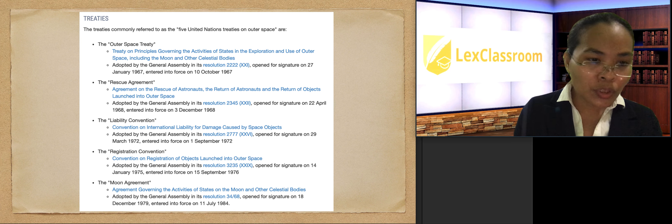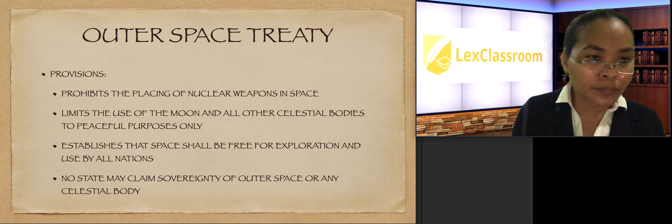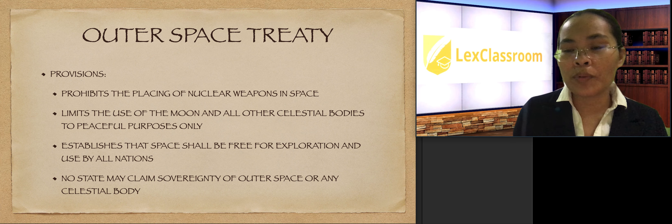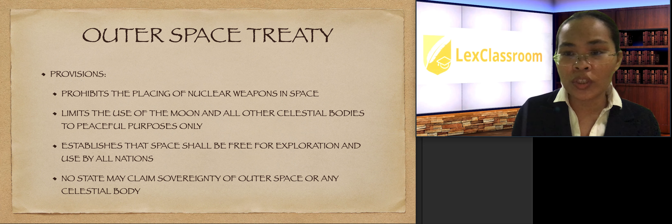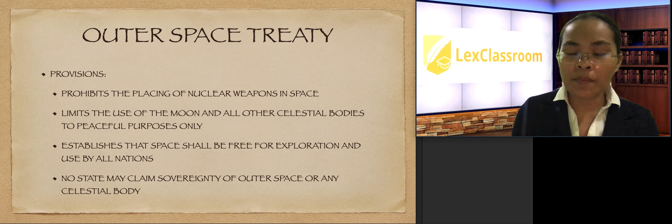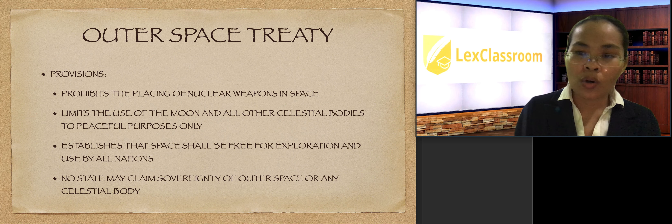These five treaties will be tackled in a very short overview. The Outer Space Treaty prohibits the placing of nuclear weapons in space, and this is related to the Nuclear Ban Treaty. It was during this time that space became the new battlefield for states like the U.S., USSR, and all other states that are storing, producing, or manufacturing nuclear weapons.